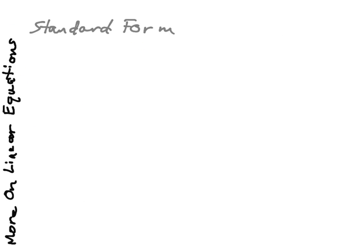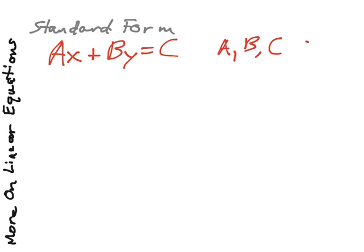Next, the next form of the equation that we have is the standard form. Now, standard form equations are those that can be written after the model Ax + By = C. And I've always learned it that A, B, and C are all supposed to be integers.